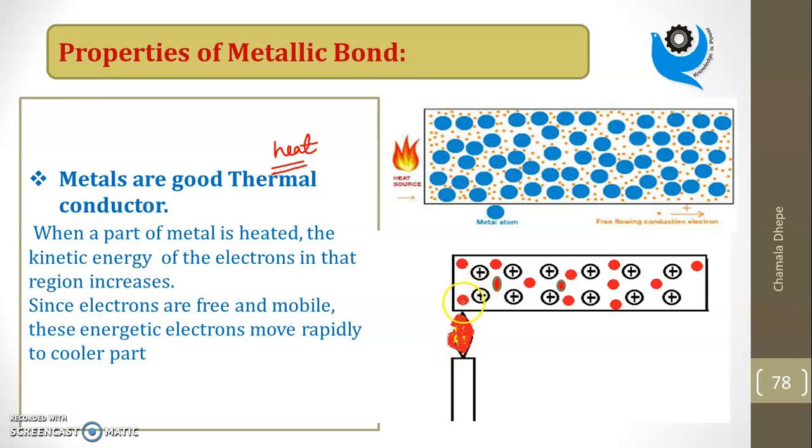When I heat here, the kinetic energy of the valence electrons increases. This is the hot part and this is the cooler part. When I heat it, the kinetic energy of electrons in this region increases. Since electrons are free and mobile, the energetic electrons move rapidly towards the cooler part. This is because of mobile electrons, valence electrons, or delocalized electrons. That is why metals are good conductors of heat also.